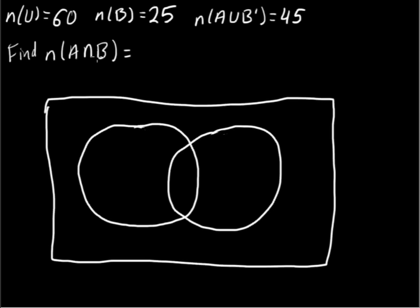We need to find the intersection of A and B, which you should already know is this area right here, the overlapping of the two sets.